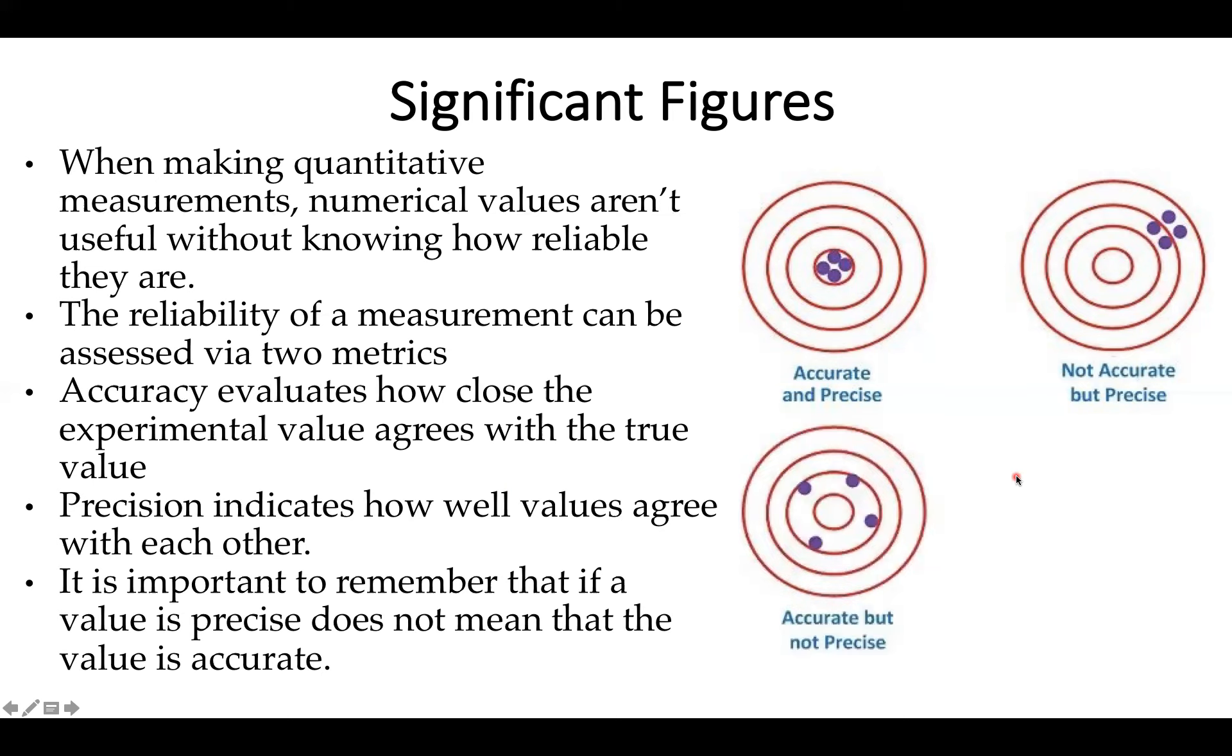Conversely, you could have data that doesn't agree well with each other. But if you take the average, you found the straight middle of the point. So it's fairly accurate, but not exactly precise. And then, of course, you can have measurements that aren't either. You're throwing wildly. You take the average. You're still off. And they don't agree with each other. So it's possible to be both inaccurate and imprecise.